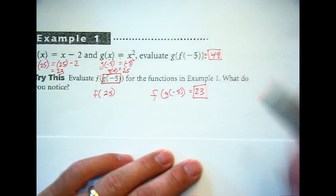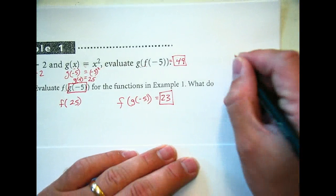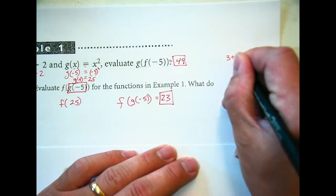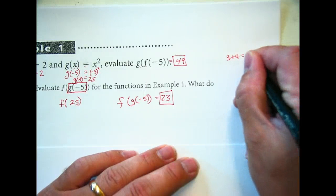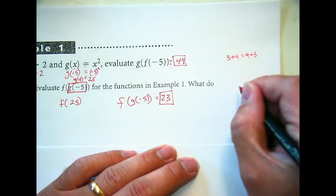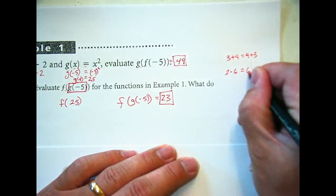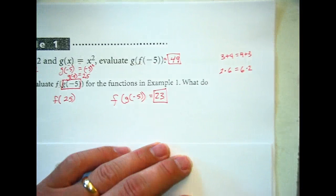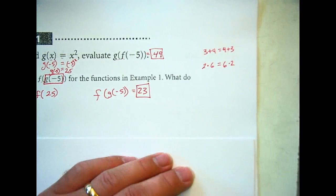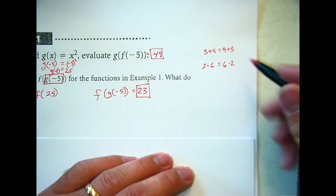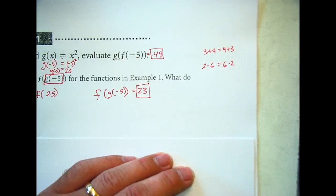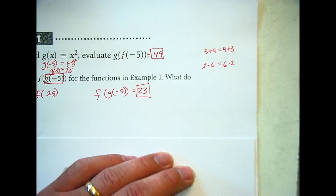So you guys have done stuff with order before. We've talked about like 3 + 4. That's the same thing as 4 + 3. You know that 2 times 6 is the same thing as 6 times 2. What property is that? It's not the associative. It starts with a C. Yes, it is the commutative.